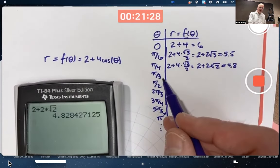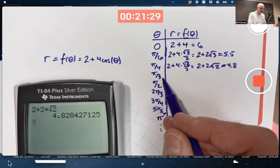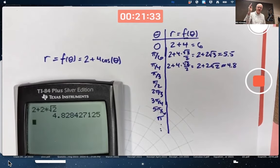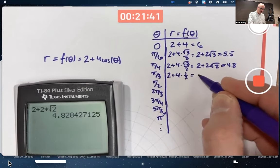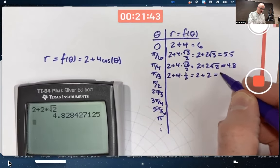When theta is pi over 3, 60 degrees. Cosine, we're moving further up the unit circle. First coordinate is a half, not to 0 yet. 2 plus 4 times 1 half. 2 plus 2, 4.